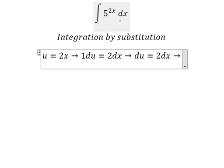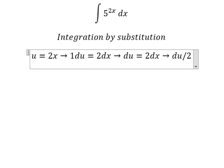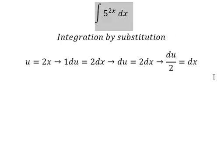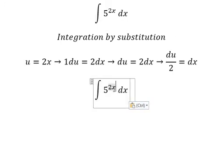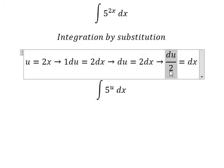Because we don't have number two in here, so we need to divide both sides by number two. This one we change by u, the x we change by this one.